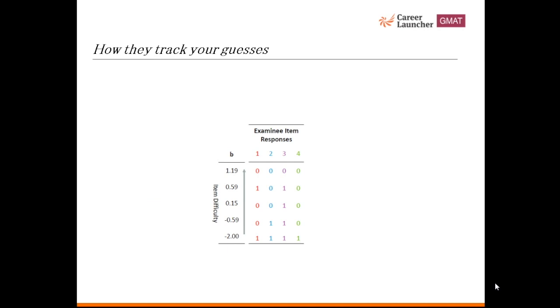Here we will look at the responses of four test takers to five questions of different difficulty levels. Zero means an incorrect response and one means a correct response. Let's compare the responses of test taker 1 and 2. Test taker 2 answered two easy questions correctly and got the rest of them wrong, while test taker 1 answered the easiest question correctly, answered easy and medium difficulty level questions incorrectly, answered a hard question correctly, and answered the hardest question incorrectly. The algorithm decides that test taker 2 is not guessing but test taker 1 is guessing, because it is very unlikely that a person who got a difficult question right would get two relatively easier questions wrong.